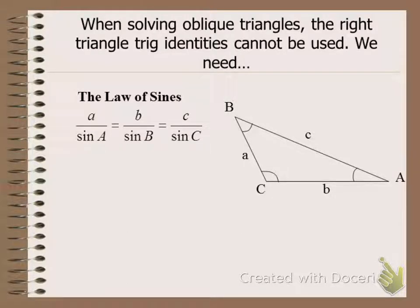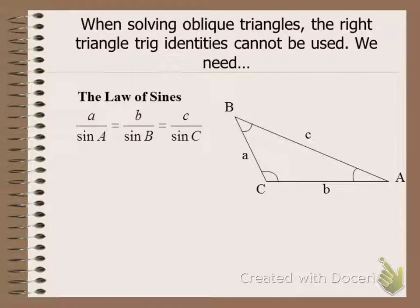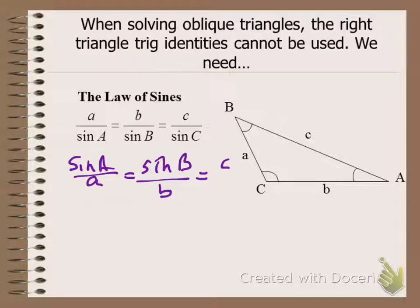Notice that an alternate form has A over sine A, B over sine B — this is equivalent because one of the properties of proportions is that you can reciprocate both sides and the truth value stays the same. We're going to use both forms of the Law of Sines. I'll explain when to use which in a moment.